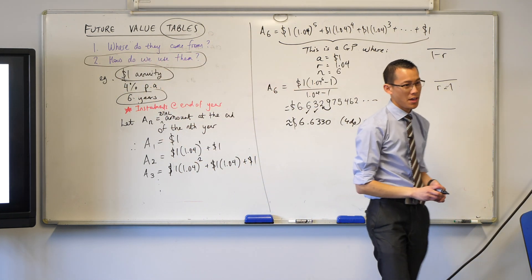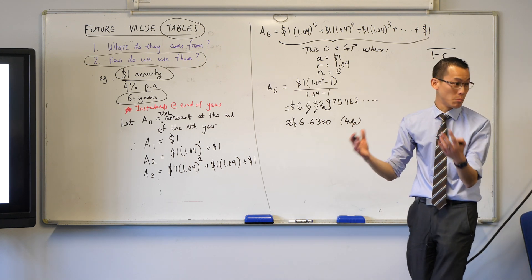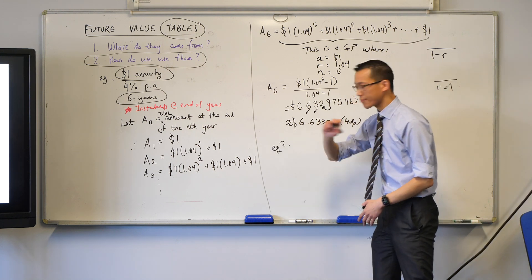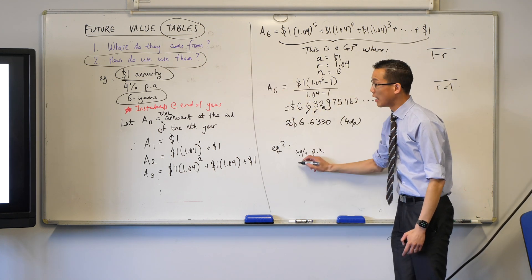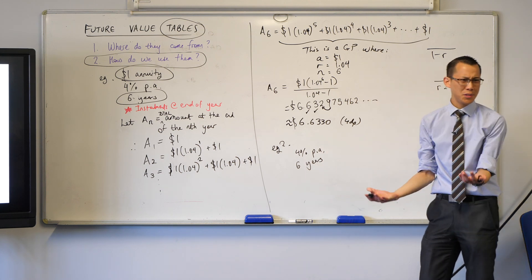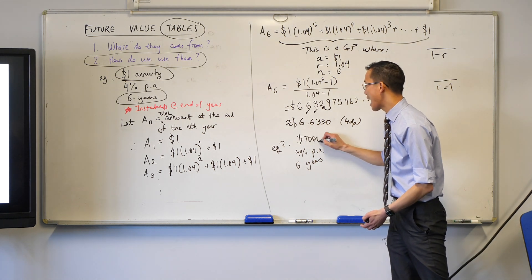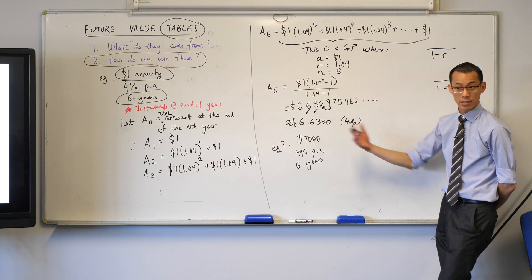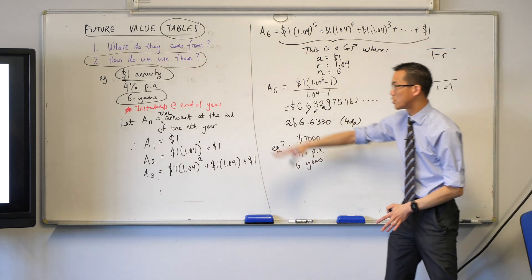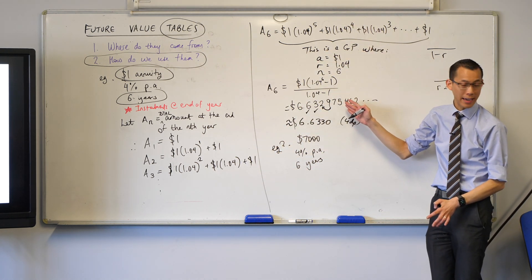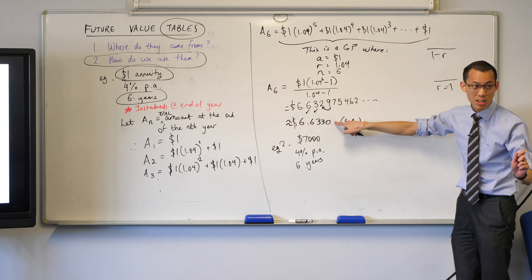How do we use these tables? Okay, so this is for an annuity of a grand total of a dollar. Clearly annuities are usually more than that. Okay, so as an example, suppose I said 4% per annum, 6 years, but who puts in a dollar every single year? We're going to have much larger sums. Let's say, for example, it was $7,000. Okay, that's actually quite reasonable for someone putting into their superannuation fund. Well, how do I use all the stuff that I just worked out? The whole point of a table is that we do not need to prove this every single time.